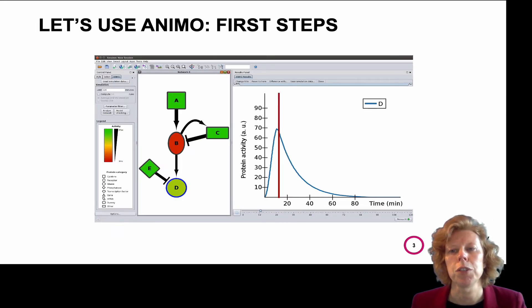Okay, so we are going to use Animo. In the example here, we have five nodes: A, B, C, D and E.